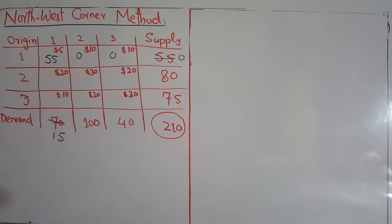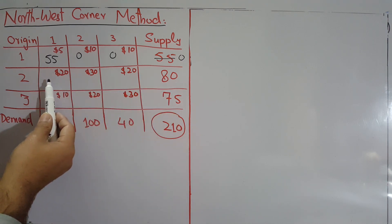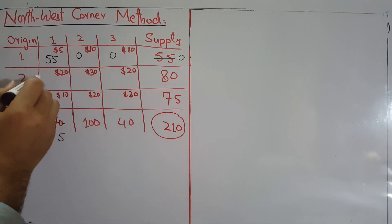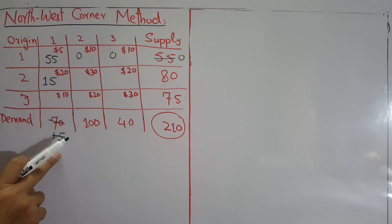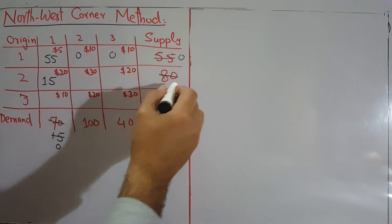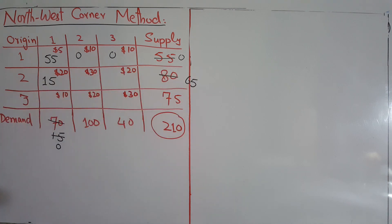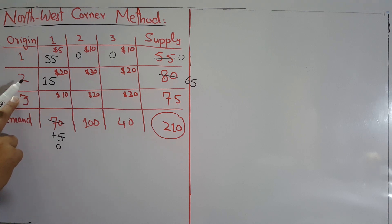In this cell, how much can we give? The supply from origin 2 is 80, so we could give 80. But the remaining demand is only 15, so the most we can give here is 15 to fulfill the demand. The 15 is taken from the 80, leaving a remaining supply of 65. The demand for destination 1 is now fully met, so we don't need anything from the third origin for destination 1 — that becomes zero.